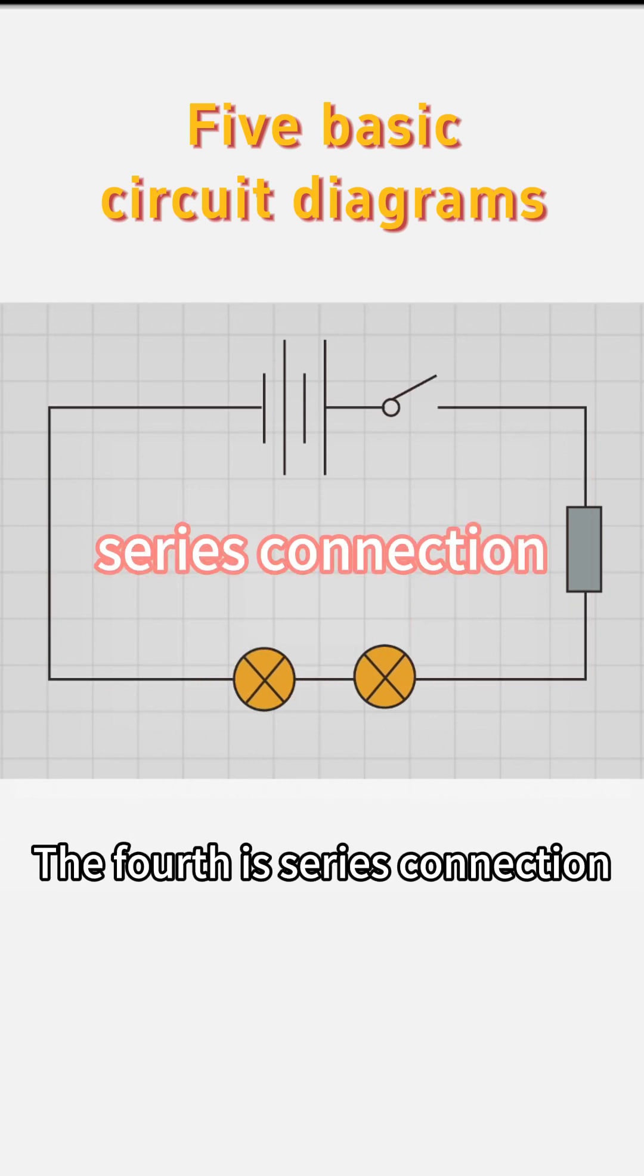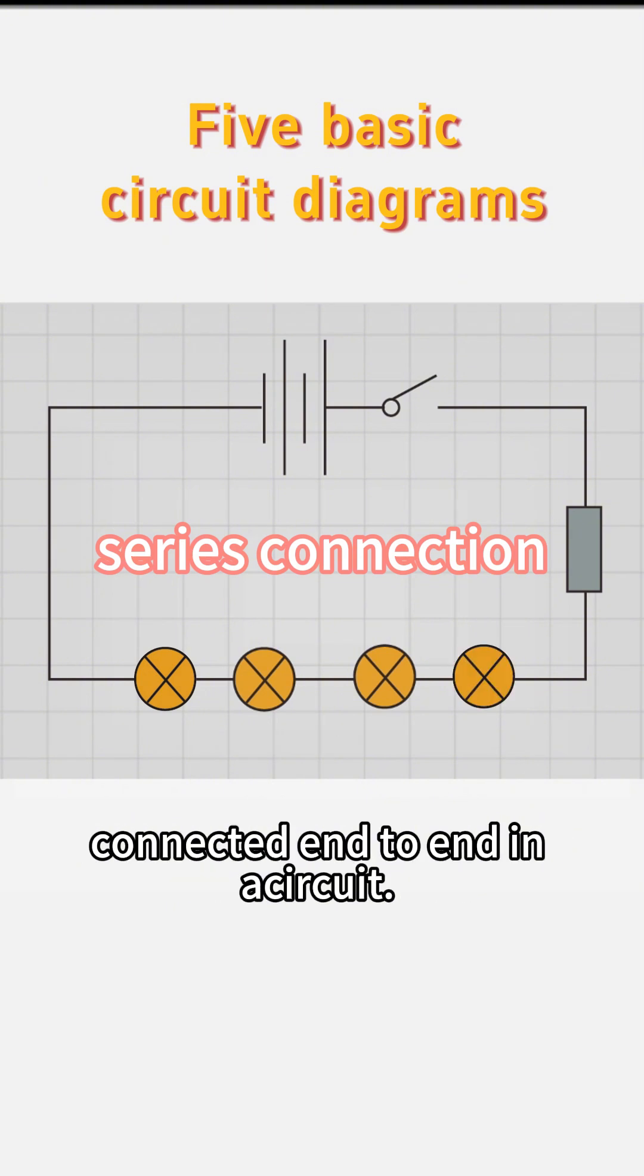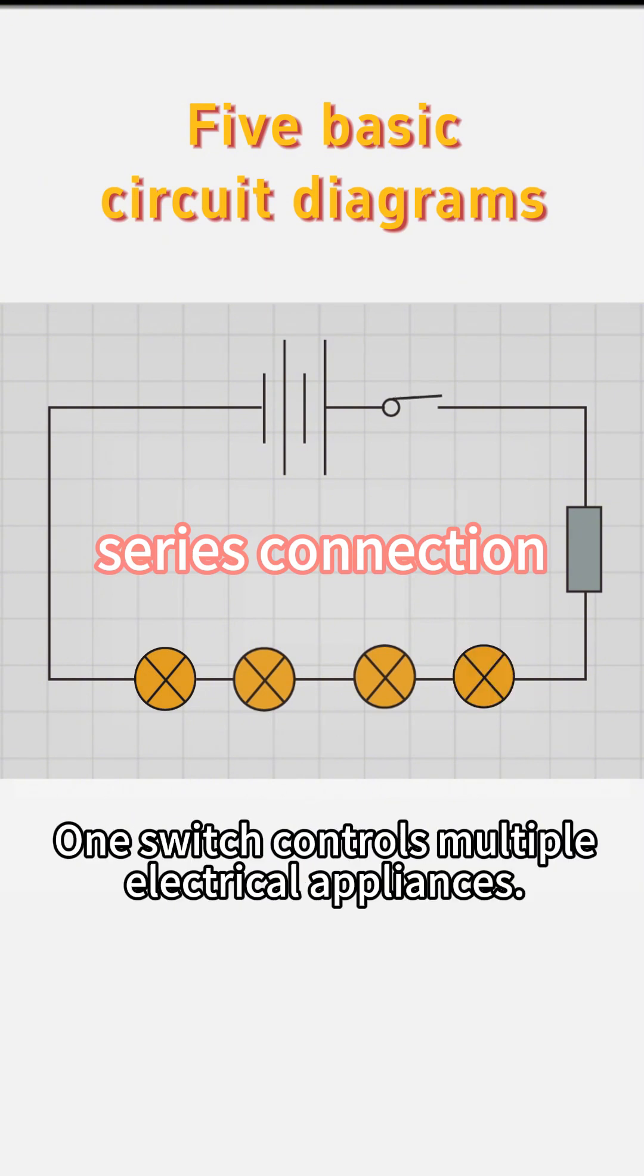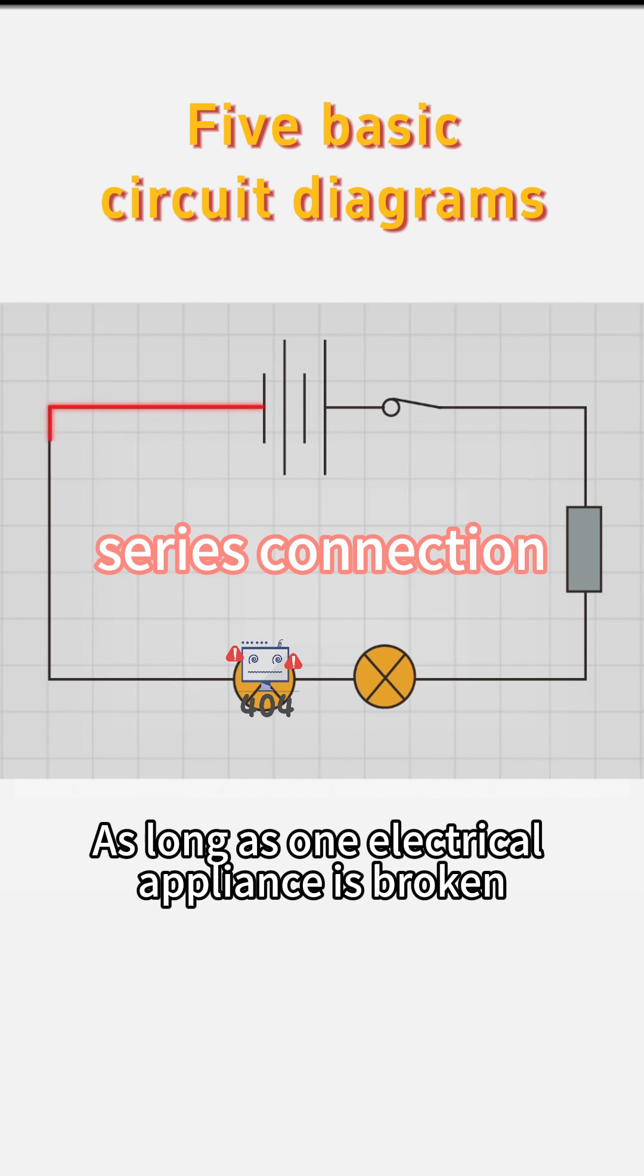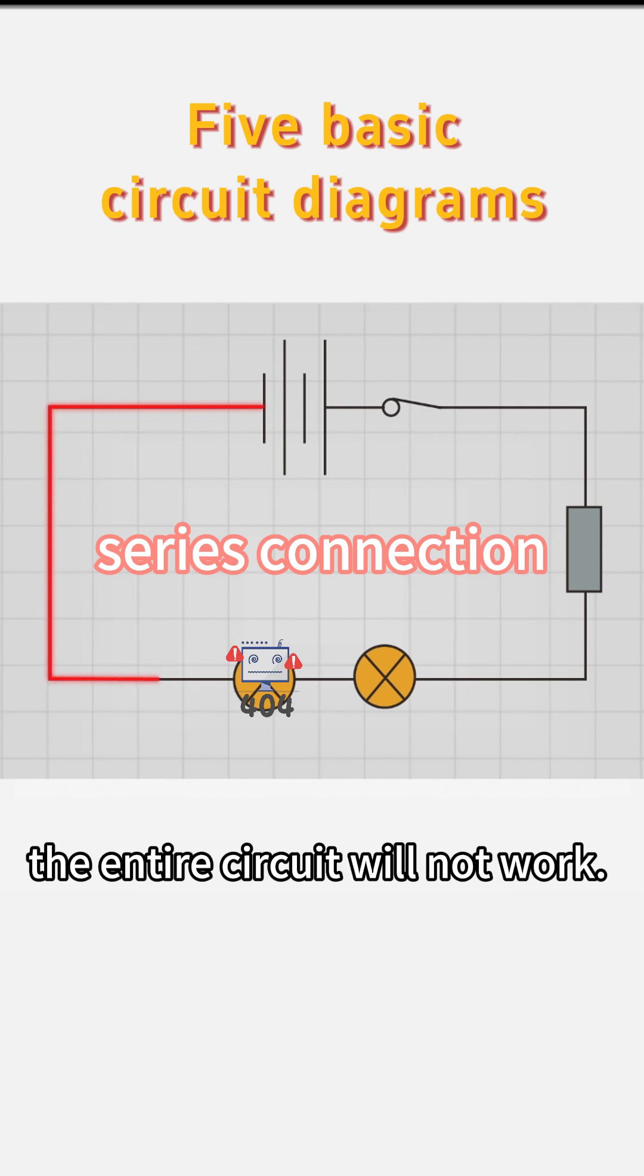The fourth is series connection, which means that multiple components are connected end-to-end in a circuit. One switch controls multiple electrical appliances. As long as one electrical appliance is broken, the entire circuit will not work.